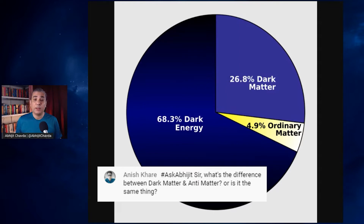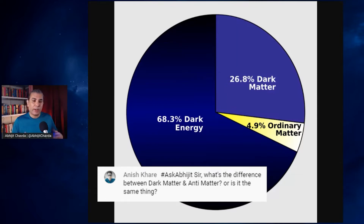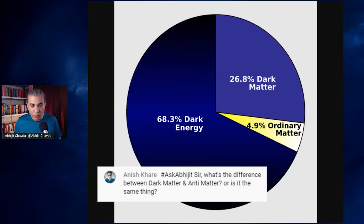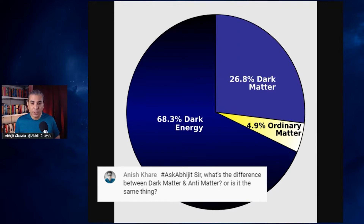We seriously do not know at this point. We have a number of theories, but as of now there is absolutely no clear direction. There are many theories — some are more in vogue right now, some are less in vogue — but none of these theories has ever come close to being proven in any way at all. That is what dark matter is.